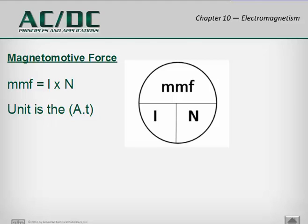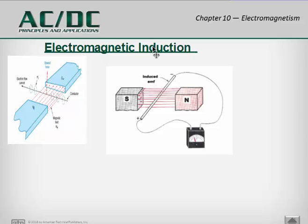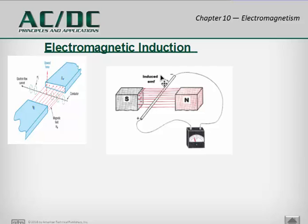The next topic is electromagnetic induction. So far we've looked at the fact that we can create a magnet with electricity, but now we're going to look at using a magnetic field to create electrical current. If you take a conductive wire and move it through a magnetic field, you will measure electrical current on an ammeter. The wire has to be moving — it has to be cutting across the lines of magnetic flux. You have to be cutting through the flux in order for it to produce an electrical current. This is known as electromagnetic induction.